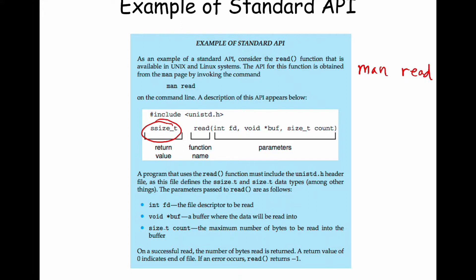So: read returns a value representing the number of bytes read. You give it the file descriptor so it knows where to pick up reading from the file. You give it a buffer — a pointer to memory — telling it where to store the information read. And you give it a count of type size_t for the number of bytes you want to read. This is fairly typical of a system call. The best way to understand it is to use it — look on Stack Exchange, find a code snippet, compile it, link it, run it, and see how it works. Engagement is the name of the game.